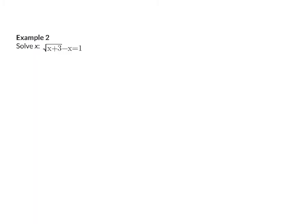Example 2. Once again, I start by getting the square root term alone on one side, so I add x to the right. Now that the square root term is alone, I can square both sides. On the left I'm left with x plus 3. On the right, squaring gives two brackets with two terms — when multiplied out: 1 plus 2x plus x squared. That middle term is important to remember.